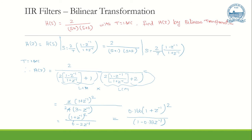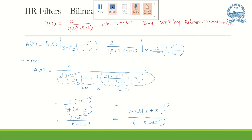The reason we express the result in the form with (1 + z⁻¹) or (1 − some term · z⁻¹) is that this format is required for implementation. That ends the discussion of IIR filter design by bilinear transformation technique.